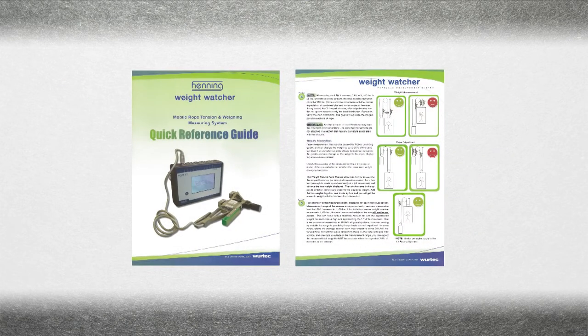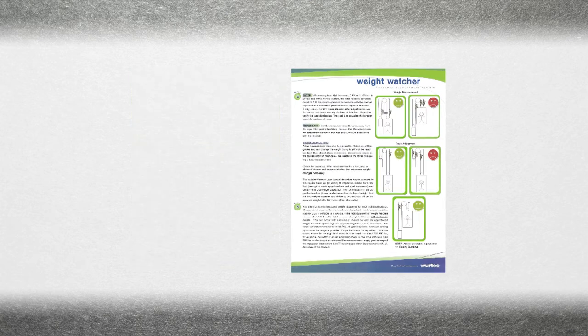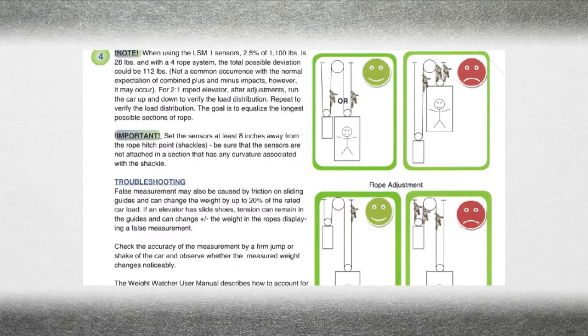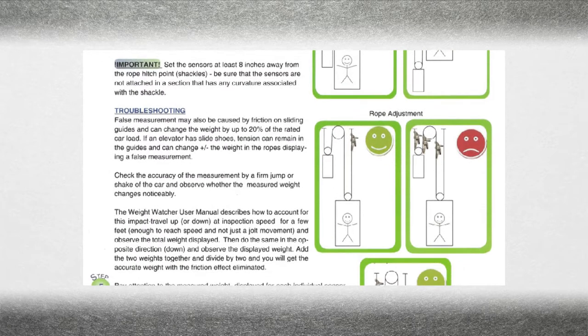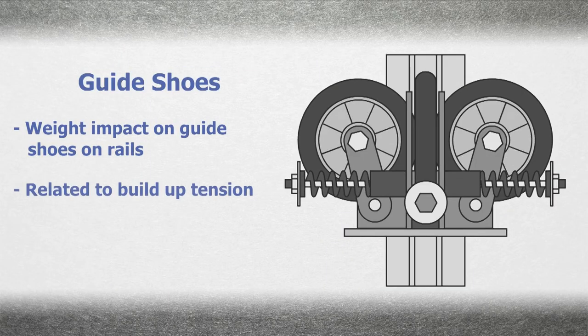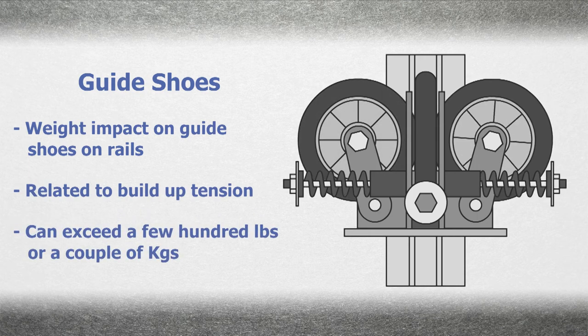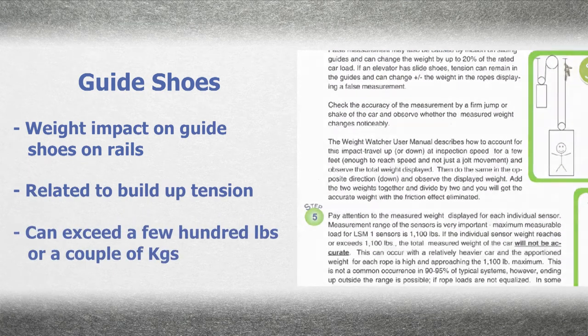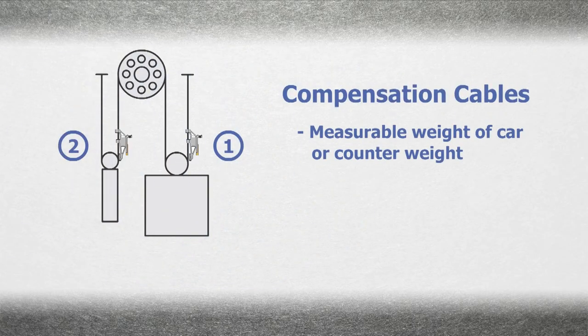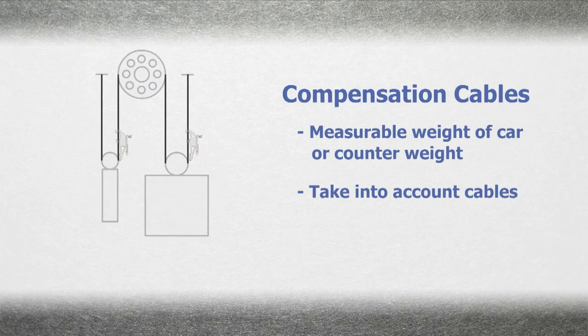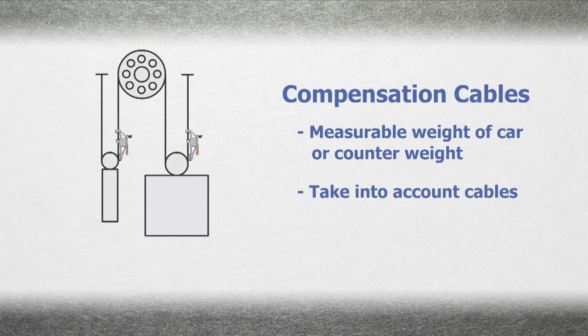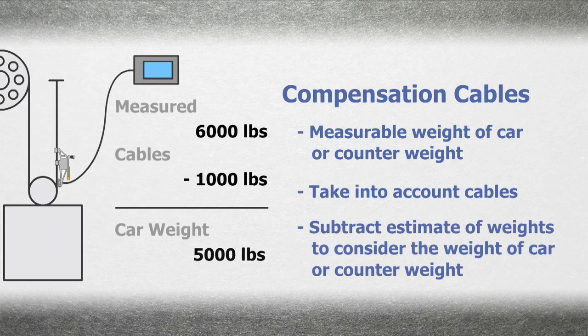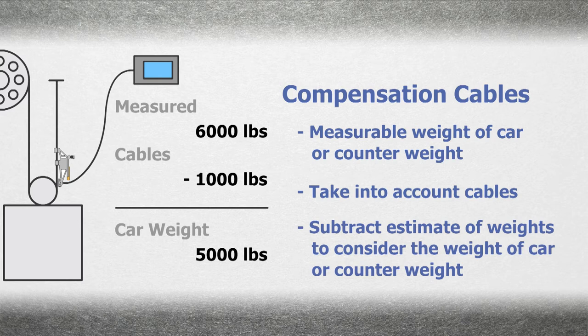For more information about setting sensors and troubleshooting circumstances that may lead to false measurement, refer to Step 4 in the Mobile Weight Watcher Quick Reference Guide PDF. There could also be some weight impact related to built-up tension in guide shoes on rails. This is covered in the troubleshooting section of the guide. When weighing cars or counterweights, you'll want to take into account compensation cables or other comp-related equipment affecting your weight. Subtract a best estimate of such weights to ensure you are only considering the weight of the car or counterweight.